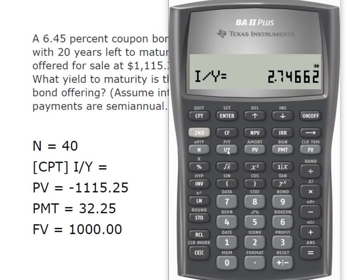But remember, that's a semi-annual rate — we need the total annual rate. So we're going to say times 2 equals. So now we know that the yield to maturity of that bond is 5.49%.